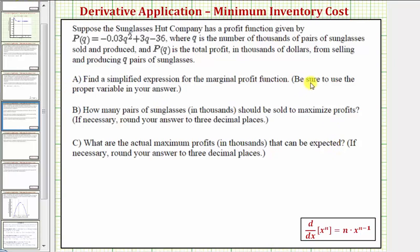So we'll first find the marginal profit function, which would be P prime of Q, which is equal to the derivative of negative 0.03 Q squared. So we'd multiply by two, so we'd have negative 0.06 times Q raised to the power of two minus one, which would be Q to the first, which is Q, plus the derivative of 3Q, that'd be three, so plus three, minus the derivative of 36, which would be zero. So this is our marginal profit function, P prime of Q.